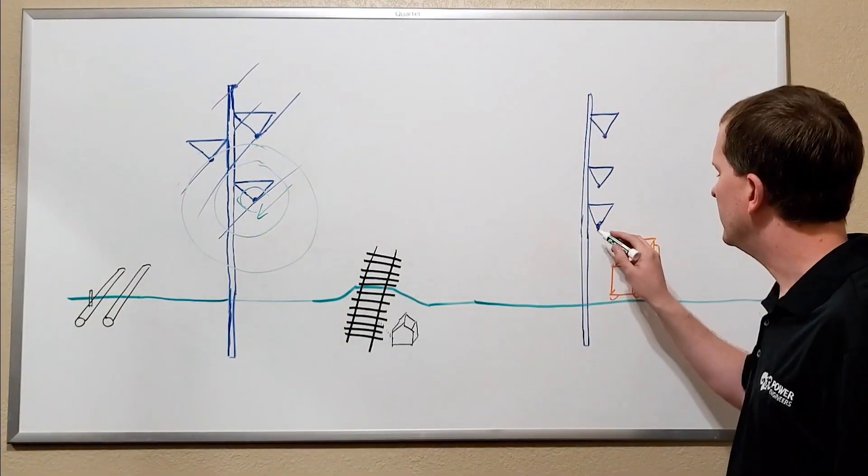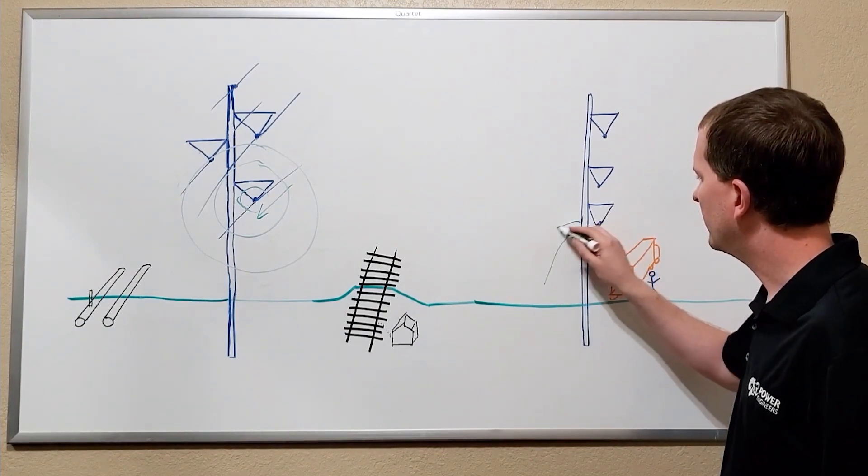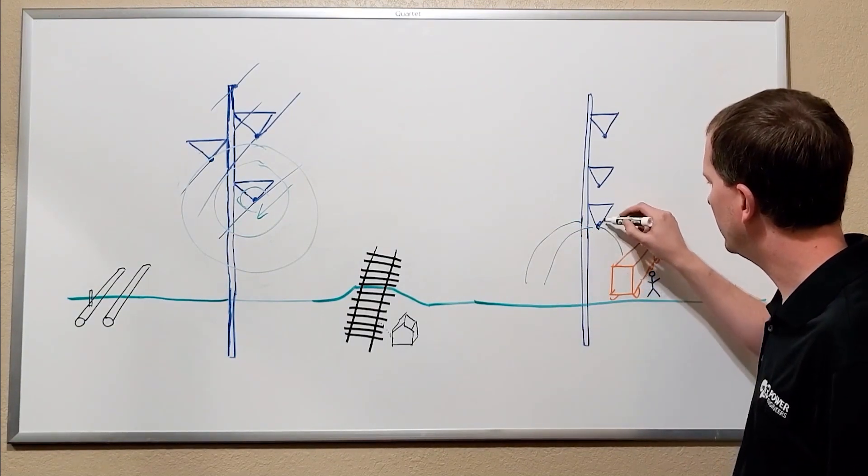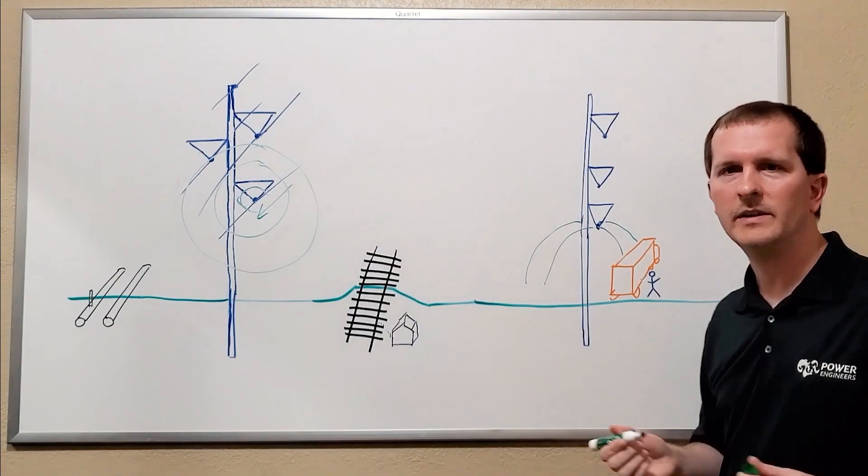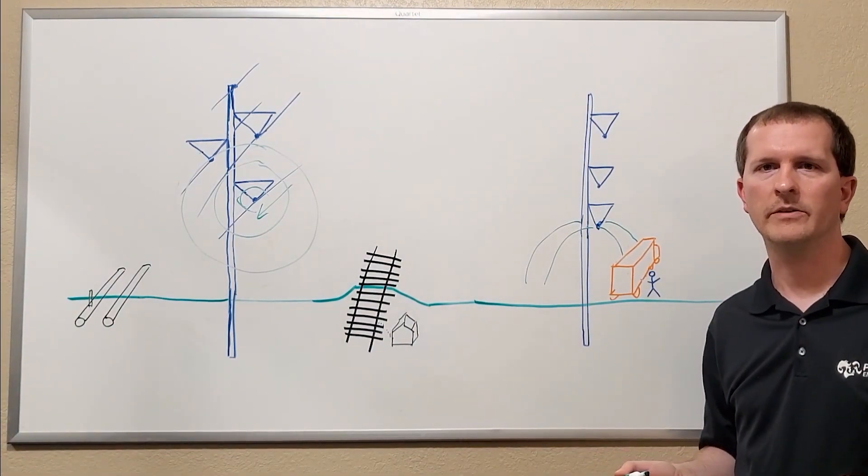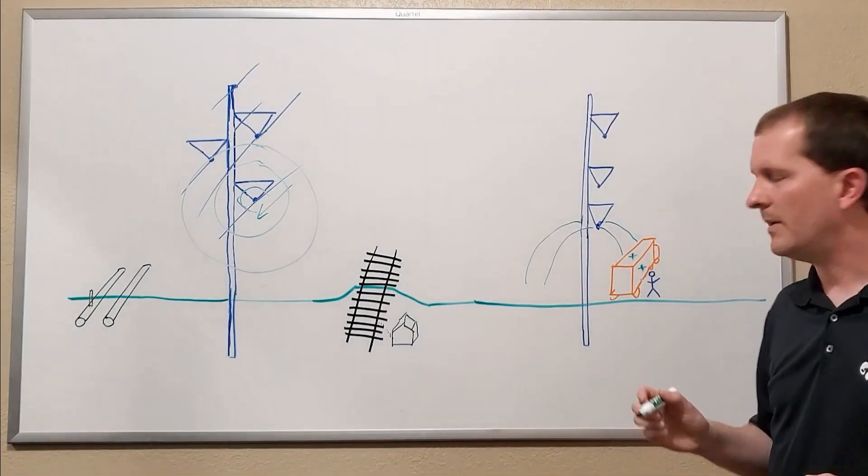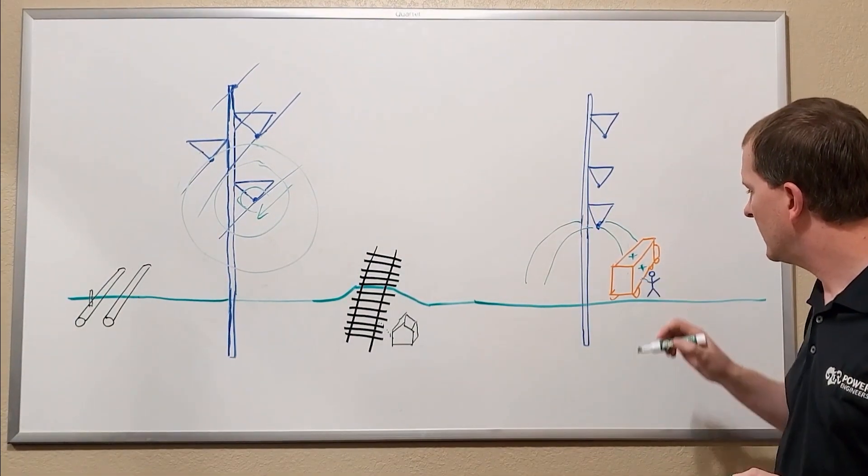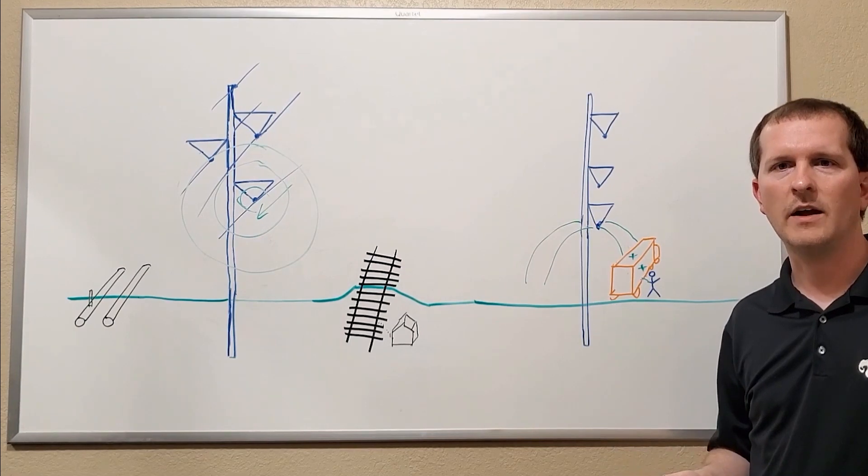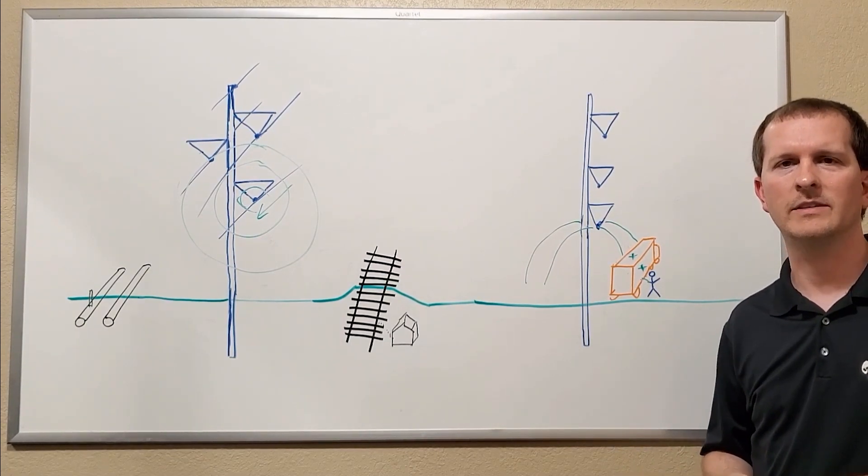The voltage on transmission line generates electric fields that can couple onto large ungrounded objects. One example is a large truck parked underneath the line, which can build up a charge on it. If an individual comes up and touches the vehicle, they'll be exposed to a shock that's very similar to a static electricity discharge, but can be much greater in certain instances.